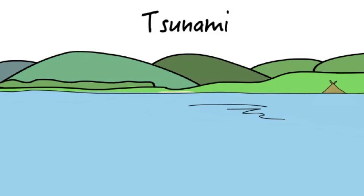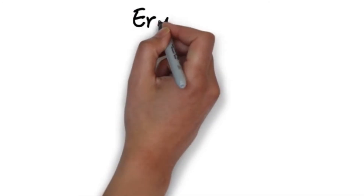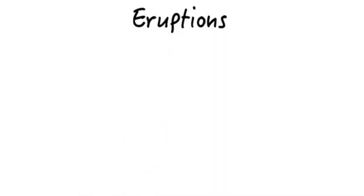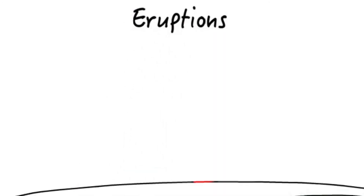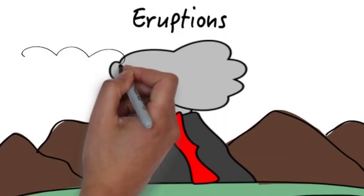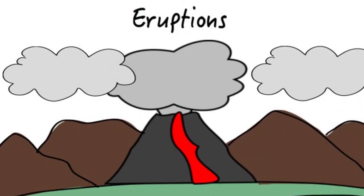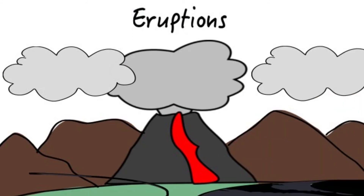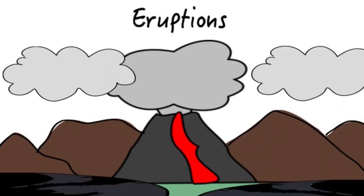Another fast change that may occur over the surface of the Earth are volcanic eruptions, which may produce pyroclastic clouds and cover the Earth with volcanic material that becomes new rocks.